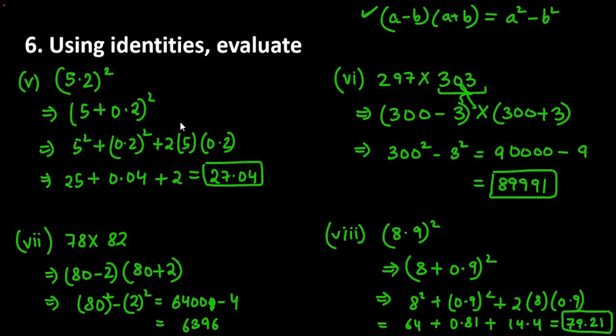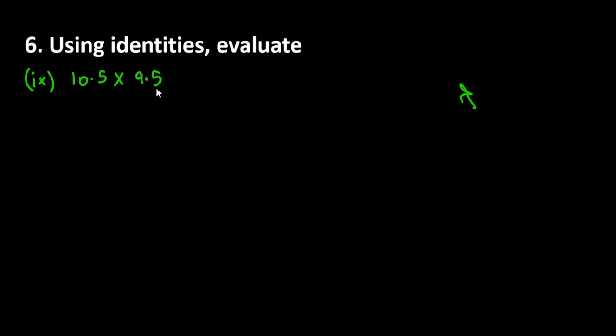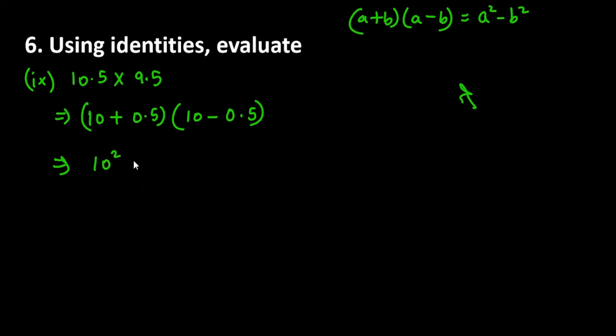Then we have the last part which is the 9th part, 10.5 into 9.5. We don't have to multiply directly, we split the terms. 10.5 as 10 plus 0.5 and 9.5 as 10 minus 0.5. Their signs are different so we apply a square minus b square. 10 square is 100, 0.5 square is 0.25. 100 minus 0.25 will give you 99.75. So this is your answer for question number 6.